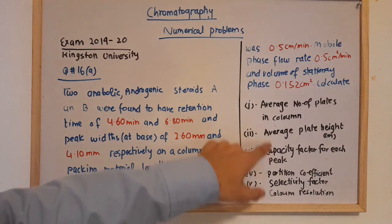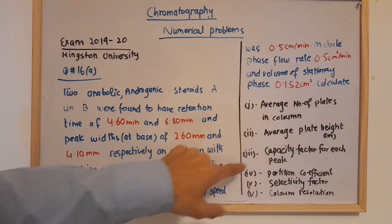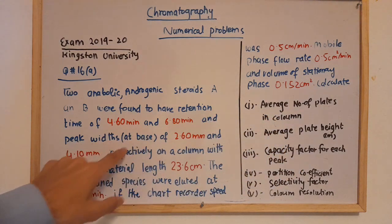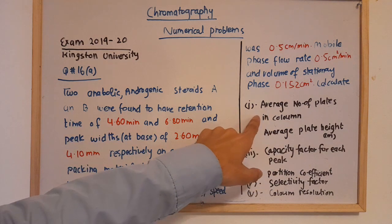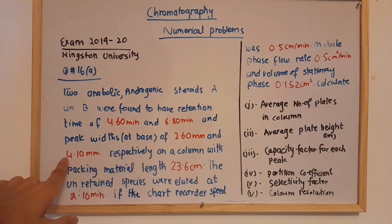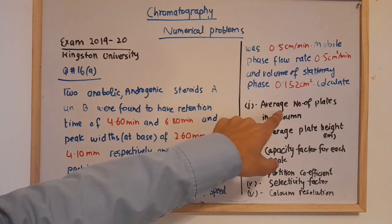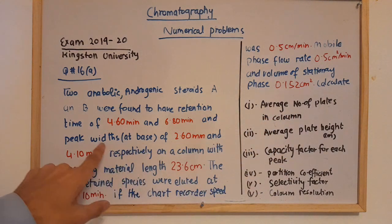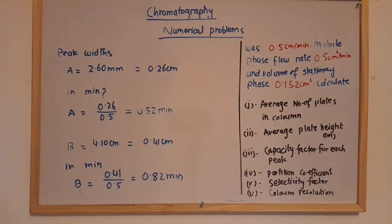I will explain all this data as I solve each value. First, I'm going to solve the average number of plates, and I'll explain which values to use from the numerical data. For the average number of plates, you have to use the peak widths of 2.60 mm and 4.10 mm.